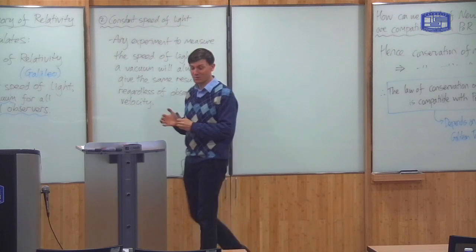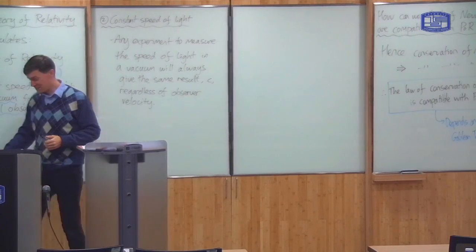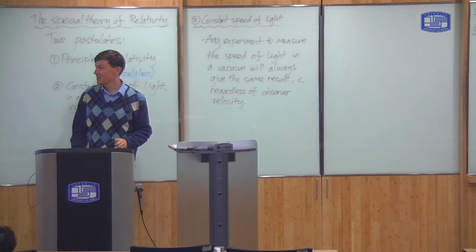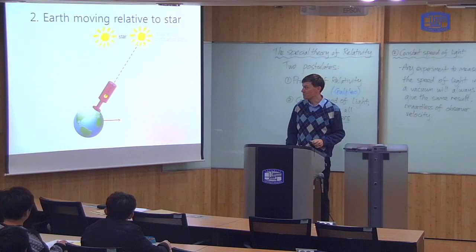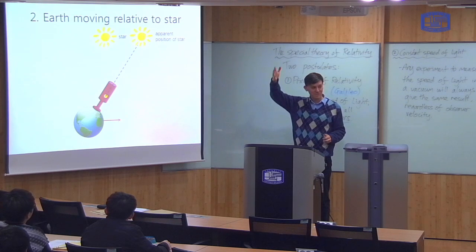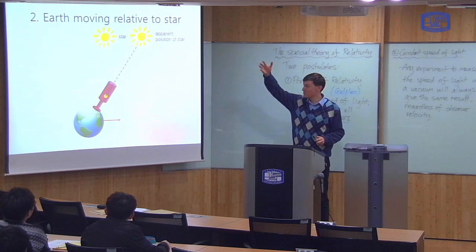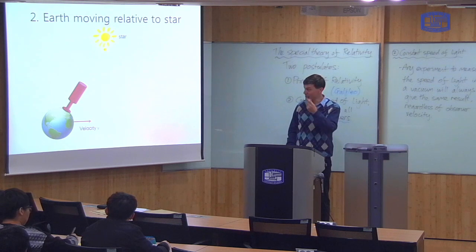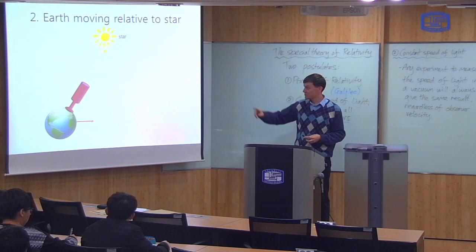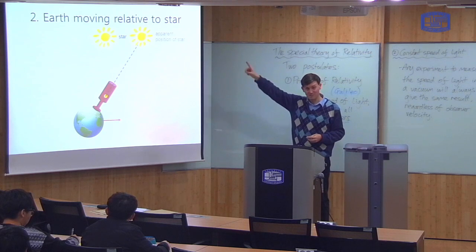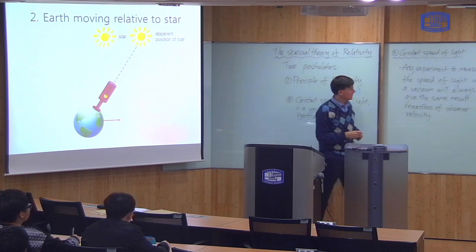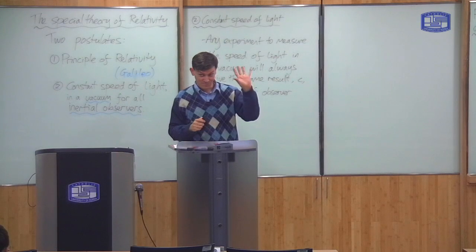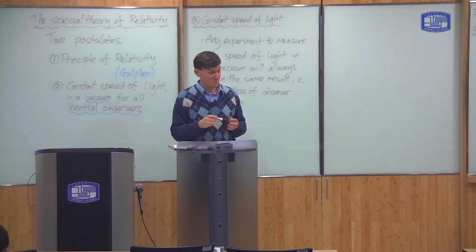It also explains the aberration experiment, because this picture here is just a picture in the rest frame of the star. I can take my observer to be someone who is stationary relative to the star; he will measure the constant speed of light c, and therefore he will see exactly this picture. So this principle can explain both the aberration experiments and the null result of the Michelson-Morley experiment.